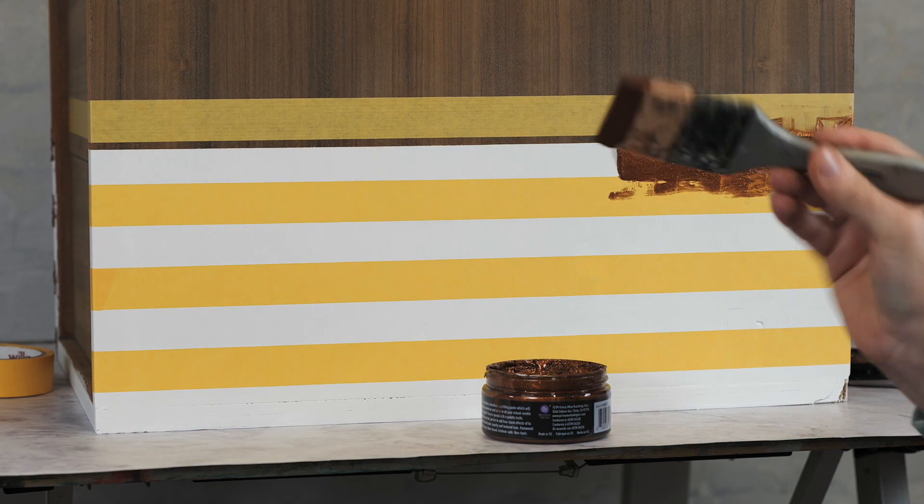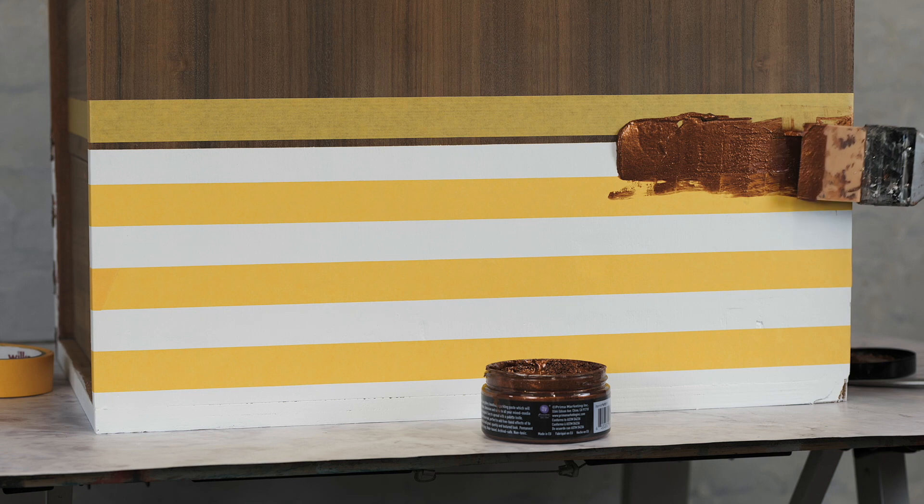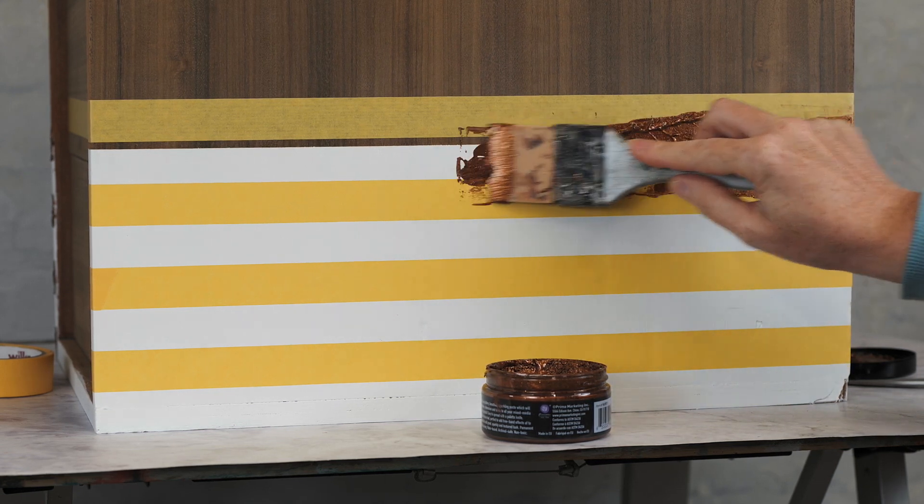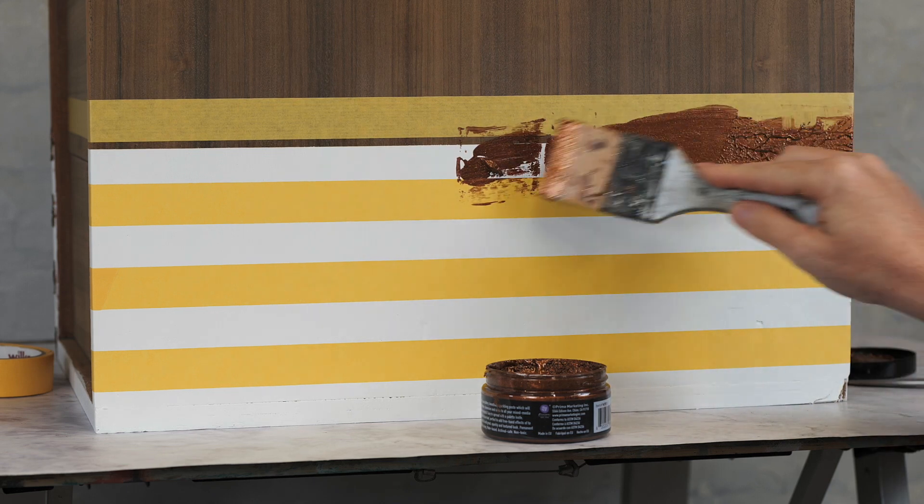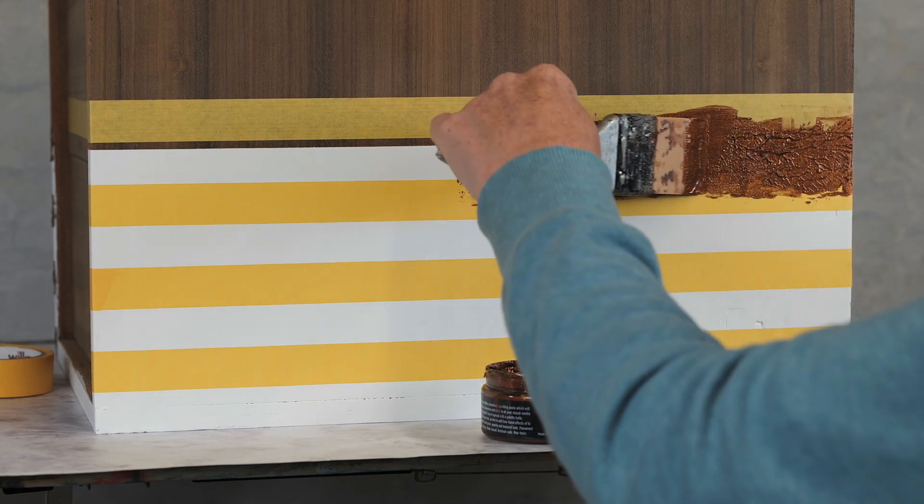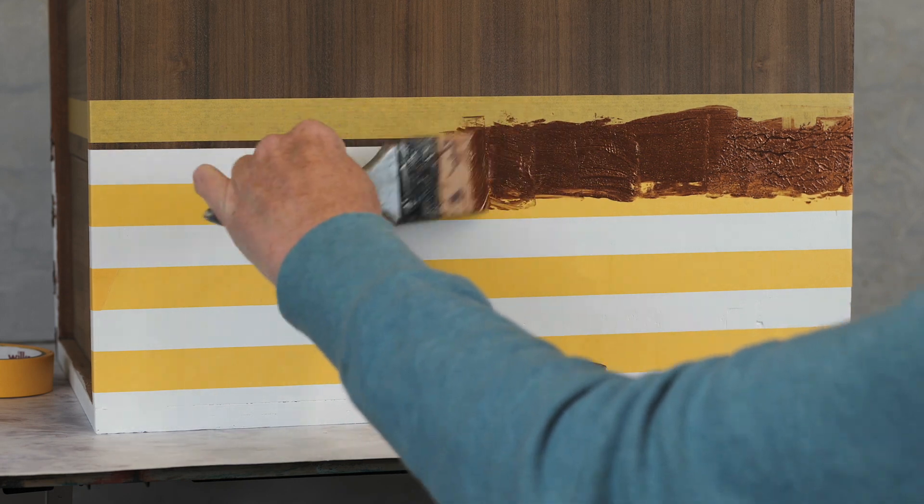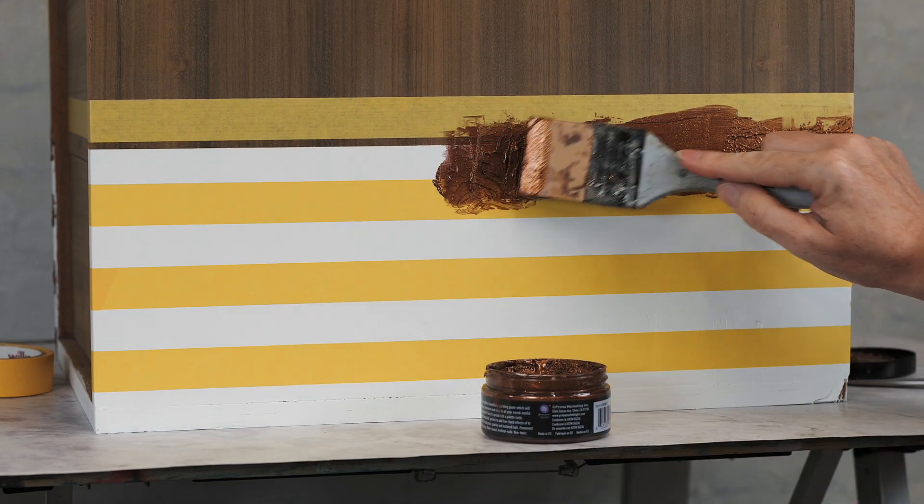And because I'm using my silicone brush, I can then dab at it to create a really interesting texture. And as I said, this is going to help disguise—spread my product along—but this is going to really help disguise where it's not quite as smooth as I would like.